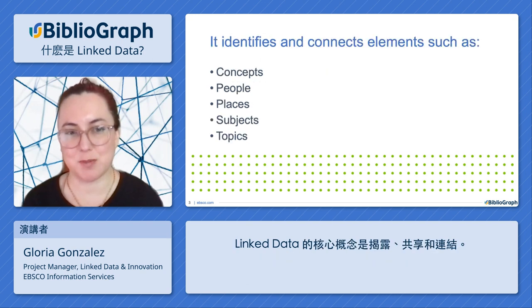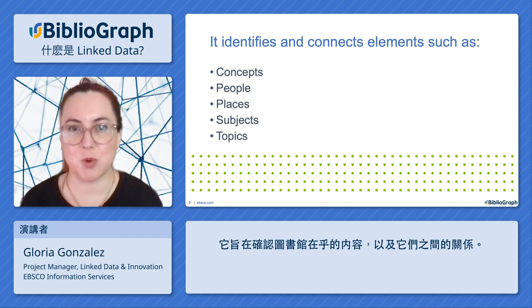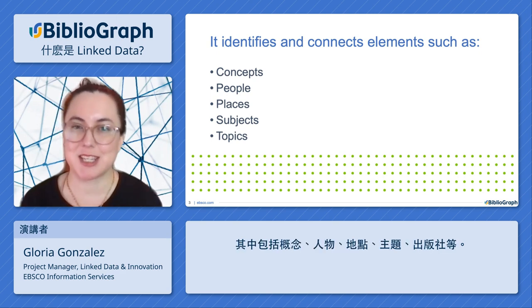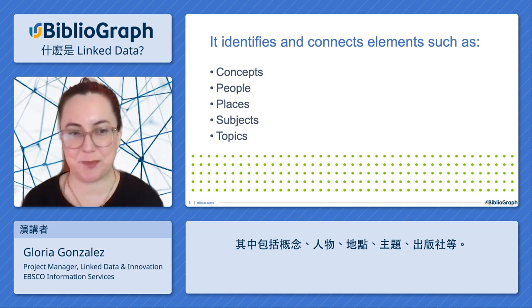Linkdata is about exposing, sharing, and connecting. It aims to identify the things that libraries talk about, as well as the relationships between them. These things include concepts, people, places, subjects, topics, publishers, and more.